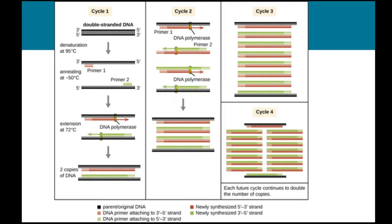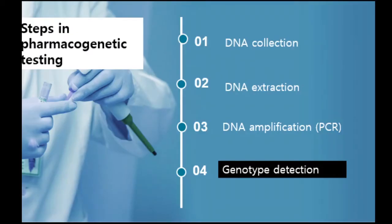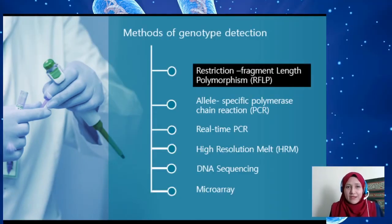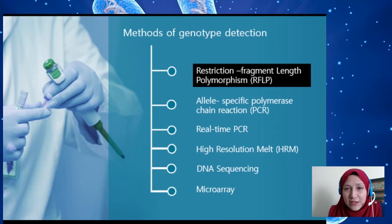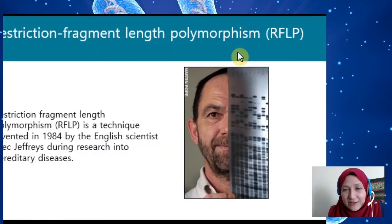This cycle is repeated for 30 to 40 times until we have enough DNA strands. The last step is genotype detection. There are six types of genotype detection tests that can be used for genotyping.